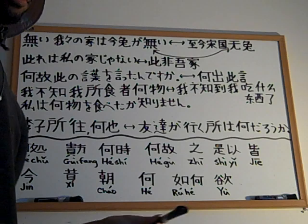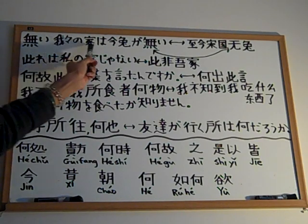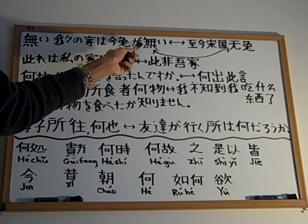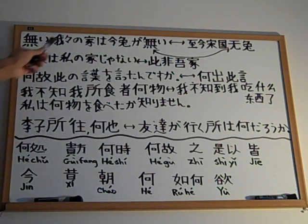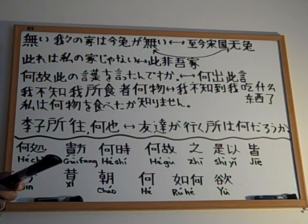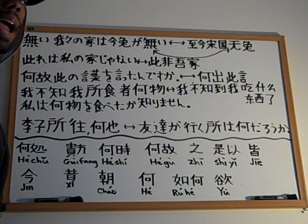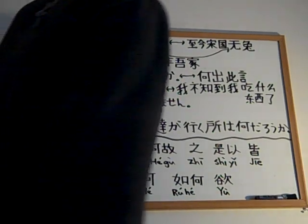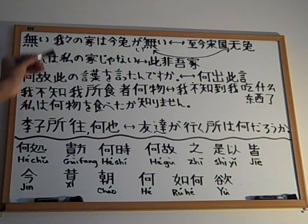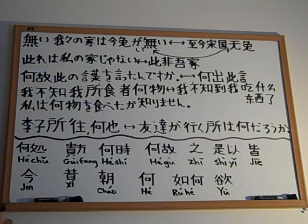So let me read this Japanese sentence: 'uchi wa ima usagi ga nai.' That means 'there are no rabbits in our house right now' — at this point in time. That's what that means.